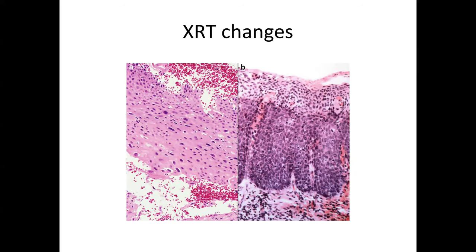Because the vagina is adjacent to the vulva and cervix — which more commonly harbor dysplasias and neoplasias — it will not infrequently end up in the radiation field. It's important to recognize that radiation change can be deceptive, sometimes masked as a low-grade lesion and at other times very much mimicking a high-grade lesion.